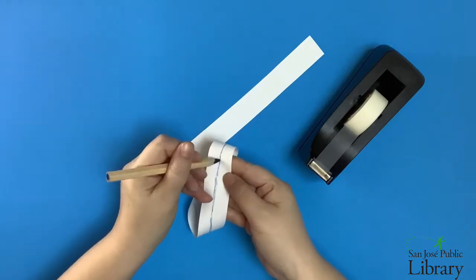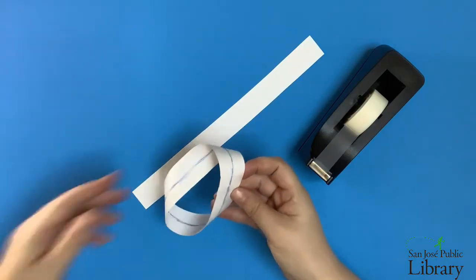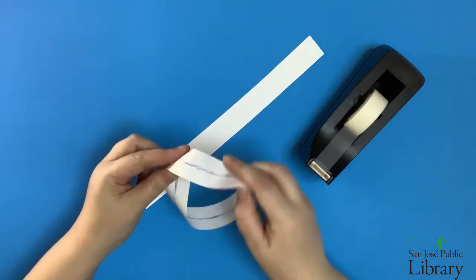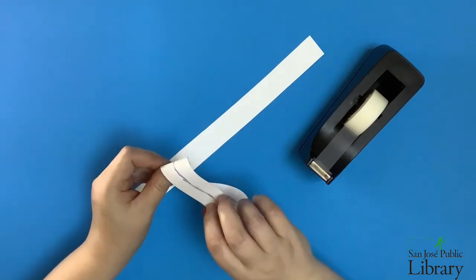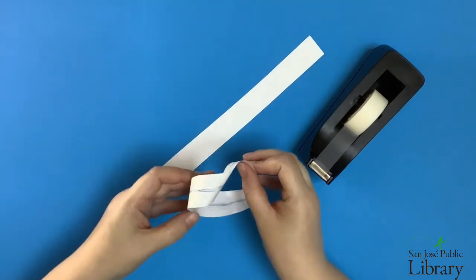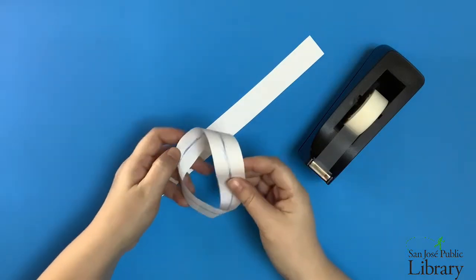So you can see now, even though I didn't really move the pencil from the paper, I now have a line on both sides of the piece of paper showing that actually there is only now one side to this ring of paper.